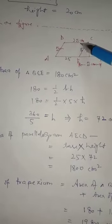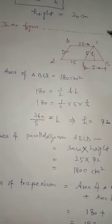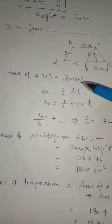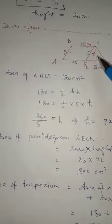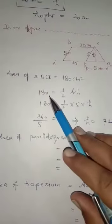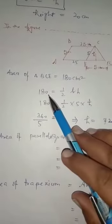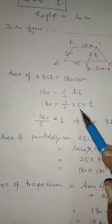Find the area of trapezium ABCD. First find the height. Triangle area equals one-half base times height. 180 equals one-half times base times height. The height is 72 cm.